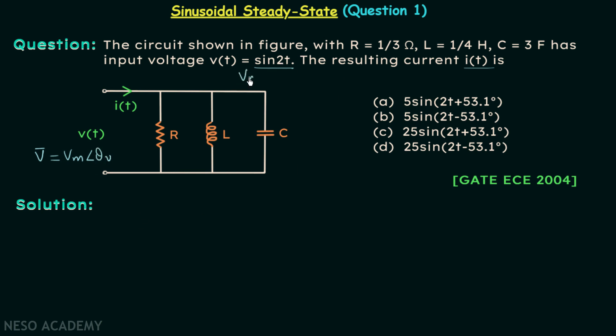V phasor corresponding to the maximum value, V(t) is equal to Vm angle θv. From here we can see that Vm is equal to 1 and θv is equal to 0. So in this way we have the phasor voltage equal to 1 angle 0 degrees in volts.